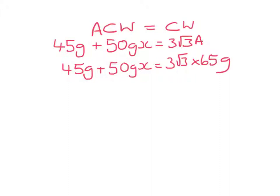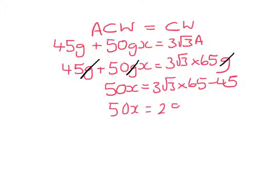I can now go through and cancel g's in every term. I can see that 50x equals 3 root 3 times 65 minus 45. 50x is 292.749 which means that x is 5.85 meters. And that has been rounded to 3 significant figures.